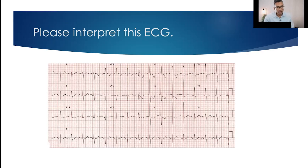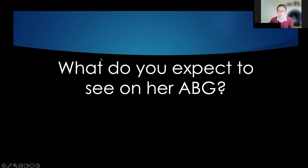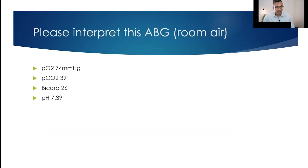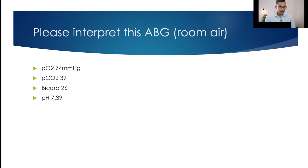What would you expect on her ABG? I'd expect an elevated A-a gradient. If she has obesity hypoventilation syndrome, I'd expect an elevated bicarbonate. Interpreting the ABG on room air: she does have an elevated A-a gradient — a normal PO2 in a 34-year-old should be well above 95. The bicarbonate, while slightly elevated, is not elevated to the extent I'd expect if obesity hypoventilation were the primary cause, making pulmonary arterial hypertension the more likely diagnosis.